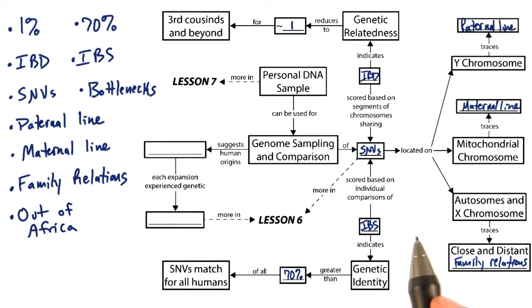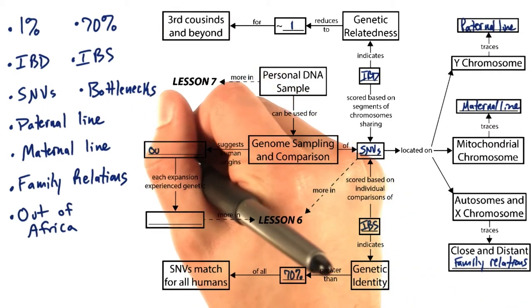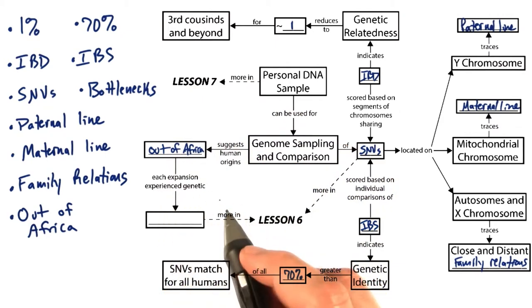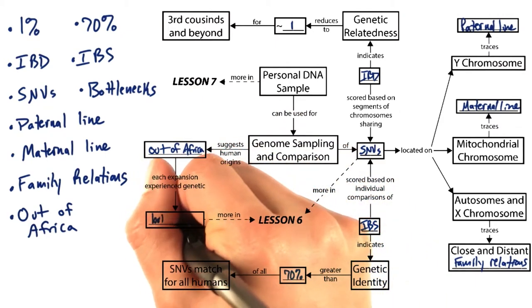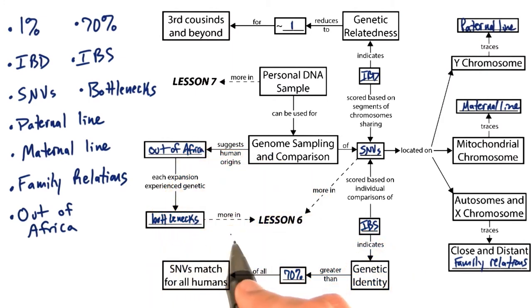Putting all of this information together, we've learned that it indicates a human origin out of Africa. With each expansion experiencing genetic bottlenecks, specifically referred to as a founder effect. But we learned about these bottlenecks more in lesson six.